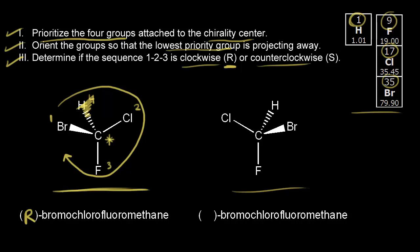Let's do the same thing for its mirror image — the compound on the right. This carbon is our chiral center. We already know how to assign priority: bromine gets number one, chlorine gets number two, fluorine gets number three, and hydrogen gets number four. So step one is done.